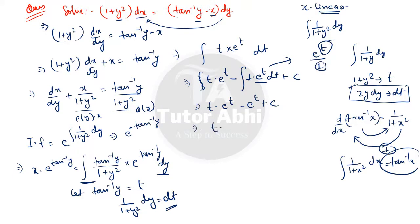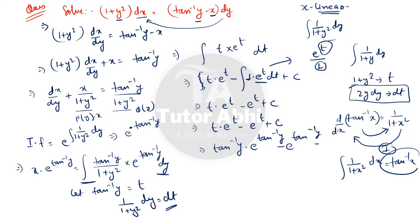Substituting back t = tan⁻¹y, the right-hand side becomes tan⁻¹y · e^(tan⁻¹y) − e^(tan⁻¹y) + C. The left-hand side is x · e^(tan⁻¹y), and the e^(tan⁻¹y) terms cancel to give the final solution.